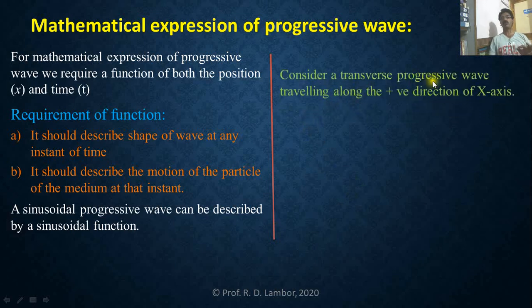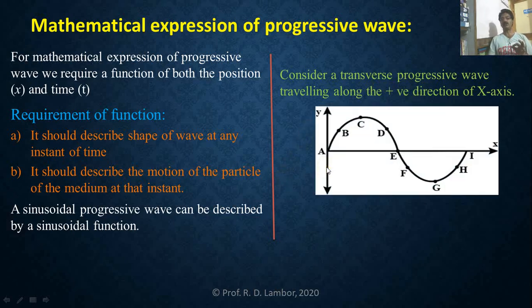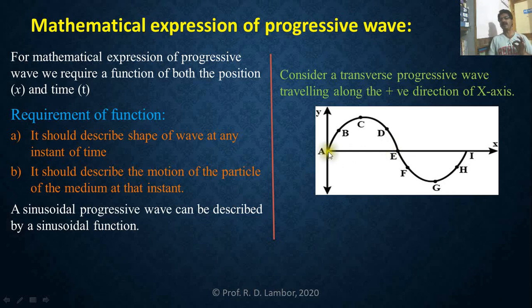We will consider a transverse progressive wave traveling along the positive direction of the x-axis. This transverse progressive wave is traveling along the positive x-direction, and in this diagram the x-axis gives the position of particles in the medium. The medium contains different particles labeled A, B, C, D, E, F, G, H, R.